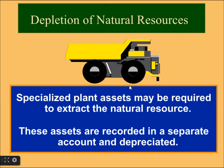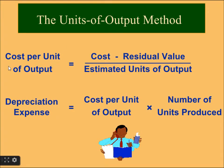Specialized plant assets may be required to extract natural resources. These assets are recorded in a separate account and depreciated using the units of output method. Cost per unit of output equals cost minus residual value divided by estimated units of output. Depreciation expense equals cost per unit of output multiplied by number of units produced.